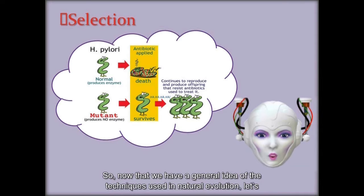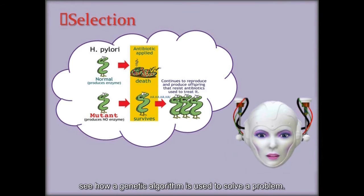So, now that we have a general idea of the techniques used in natural evolution, let's see how a genetic algorithm is used to solve a problem.